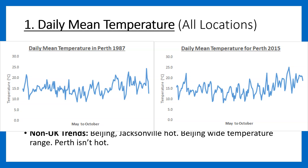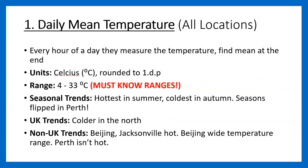In the UK, the north is typically colder. For non-UK locations, Beijing and Jacksonville are quite hot, and Beijing has a noticeably wide temperature range as well. Perth isn't that hot for the reasons I just explained with the seasons.